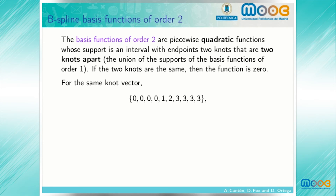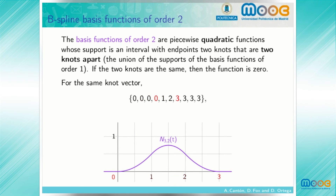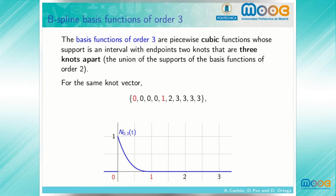Again, considering the same knot vector, the first basis function of order 2, corresponding to the first knot and the fourth knot separated by two knots, is identically 0. But the second basis function is already not identically 0. We see how the basis functions evolve as we pass through the knot vector. The basis functions of order 3 are piecewise cubic functions whose support is in an interval with endpoints 2 knots that are 3 knots apart. For the same knot vector, any 2 knots which are 3 knots apart are not repeated, so none of the basis functions is identically 0.